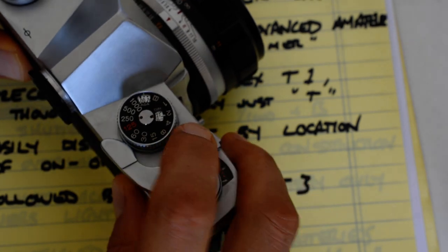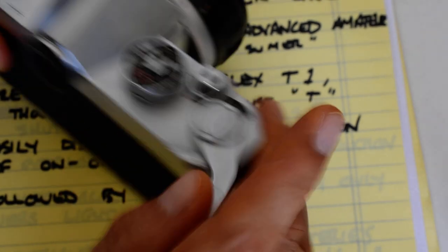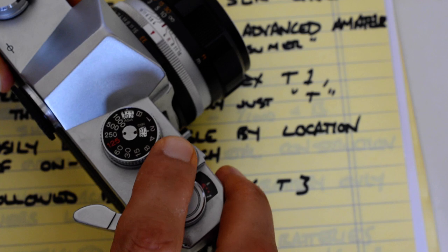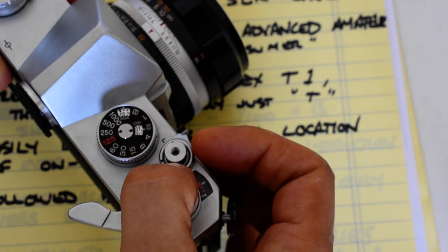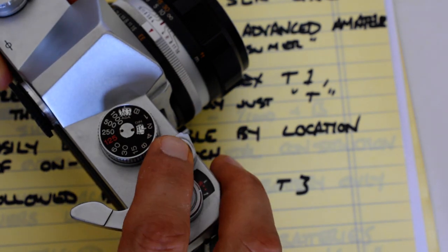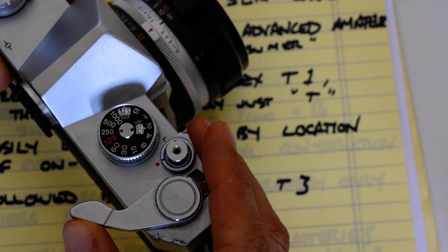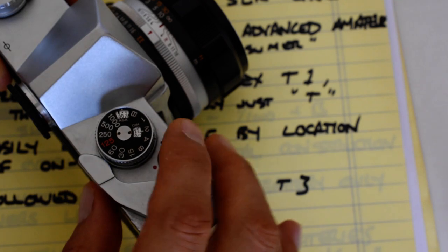L stands for lock. You press that and the shutter function is locked out. I can't release the shutter. Turn the little indicator to the red dot and it is now functioning. That's the on-off switch and shutter lockout function on the T2.